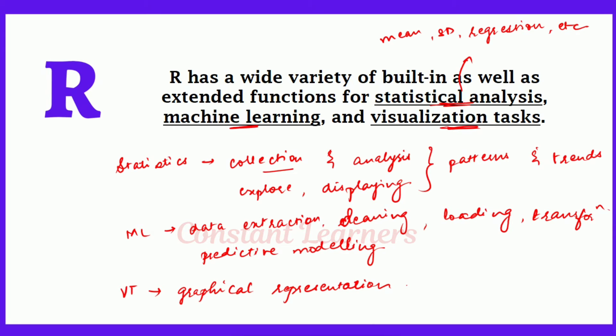I hope that this much was clear. So you do not have to memorize anything. The first point will be it is an open source programming language and software environment, explain all of those three points. Second point will be it was developed by who and where, that will be a second point. And third point, it is used for statistical analysis, machine learning, and visualization tasks, and we can explain all the three points.